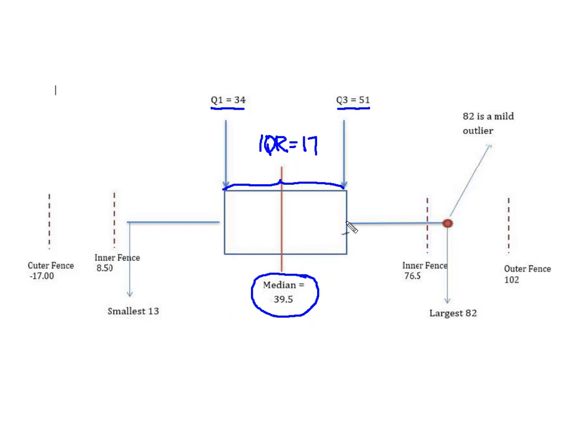We're also going to draw our whiskers. To draw the whiskers, we begin at the hinge. We come out to the right until we reach our largest value of 82. On this side, we begin at our hinge and go to the left until we get to our smallest value, which was 13. Last but not least, we're going to create these inner and outer fences. My inner fence, my lower inner and outer fences, I just use the little dash lines. And then my inner and upper outer fence have been indicated on the plot.